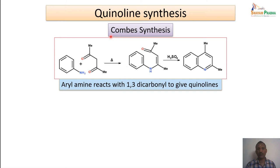In Combes synthesis, aryl amines (anilines) are reacted with 1,3-dicarbonyl compounds. In the first step, a Schiff's base-like reaction forms an enamine, which carries a carbonyl unit. This enamine undergoes acid-catalyzed cyclization using sulfuric acid: the pi-electron-rich aromatic ring attacks the electrophilic carbonyl carbon, forming a hydroxy tetrahedral intermediate, which dehydrates to give a double bond. This double bond shifts toward the nitrogen, yielding the Quinoline moiety.